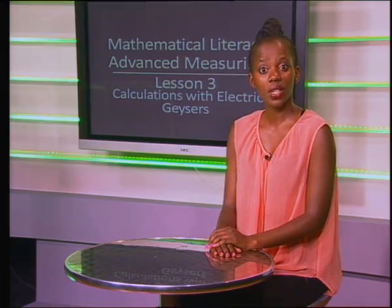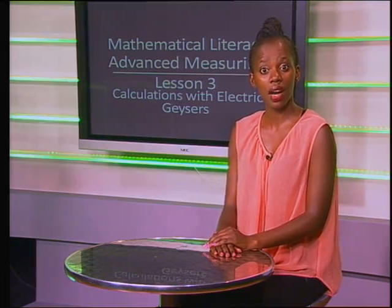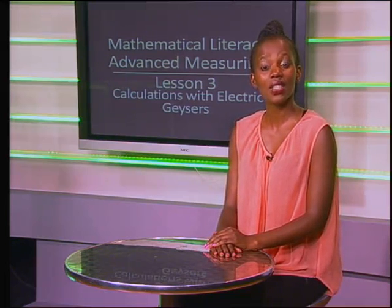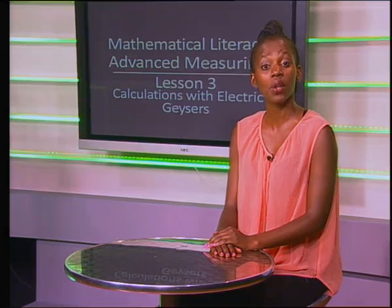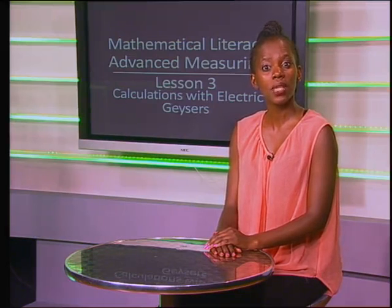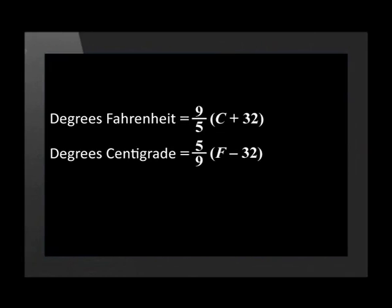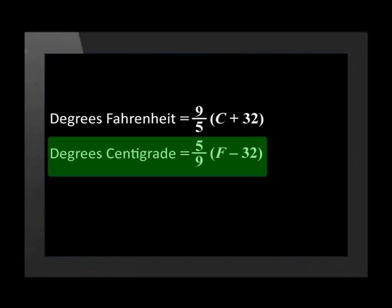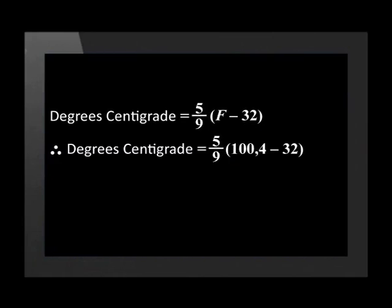Now that the contractors know more about the electrical geyser they'll be installing in every house, they have one last query. The box packaging states that the geyser's optimum temperature is 100.4 degrees Fahrenheit. The contractors want to know what the optimum temperature is in degrees centigrade. Using the formula for converting Fahrenheit to centigrade, we substitute 100.4 for F and use a calculator to get the answer of 38 degrees centigrade.